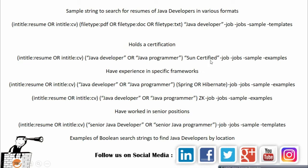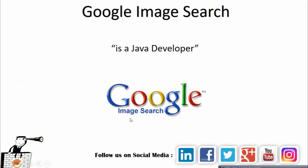Finally, education and certifications can be searched using various formats. You can find people who hold a certification like Sun Certified, or relate to a specific framework such as Spring or Hibernate. You can also search for senior positions by using senior java developer as a title in your search string.